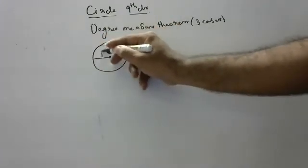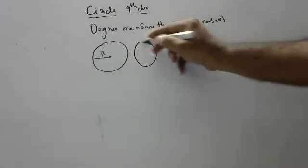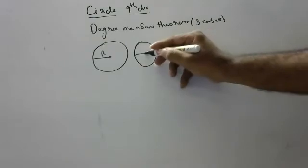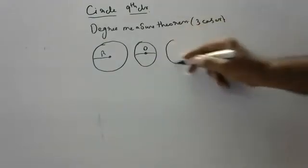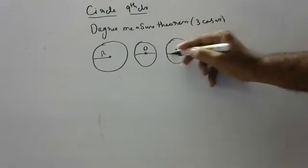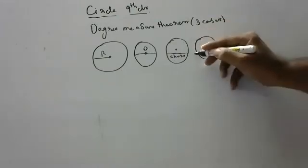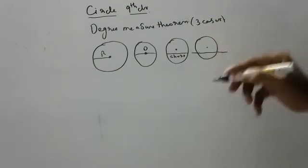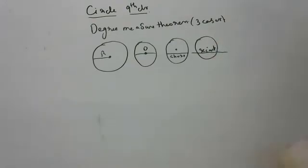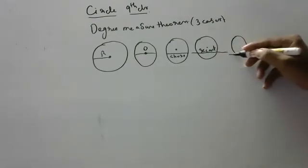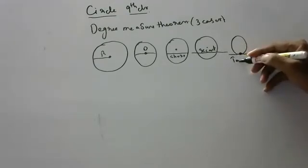This is called the radius. If you extend the radius, it will become the diameter. If you bring the diameter down, it will become a chord. If you extend the chord outside on both sides, it is called a secant. If the line is touching at one point, then that is called a tangent.